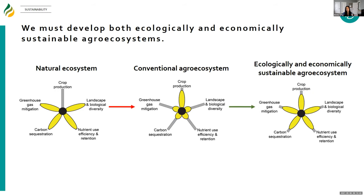The goal of developing a sustainable agroecosystem is both from the ecological and economic perspective. We want to regain ecosystem services such as greenhouse gas mitigation, carbon sequestration, nutrient use efficiency and retention, but we can't do that by sacrificing crop production because it still needs to be economically sustainable. So we have to come up with systems where we can either maintain or potentially even enhance crop production while enhancing the production of these other ecosystem services.